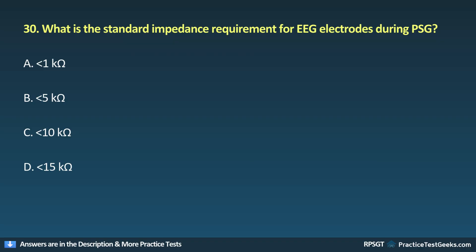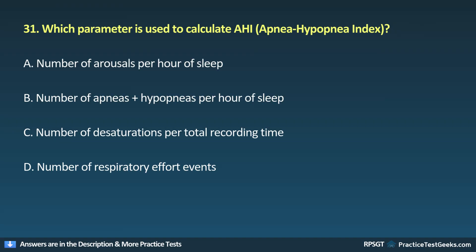Question 30: What is the standard impedance requirement for EEG electrodes during PSG? A. Less than 1 kilo-ohm, B. Less than 5 kilo-ohms, C. Less than 10 kilo-ohms, D. Less than 15 kilo-ohms.